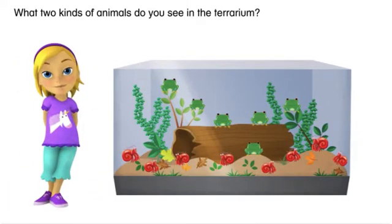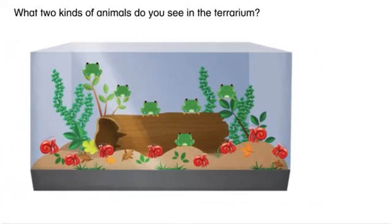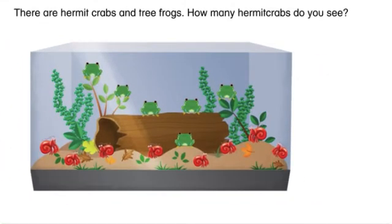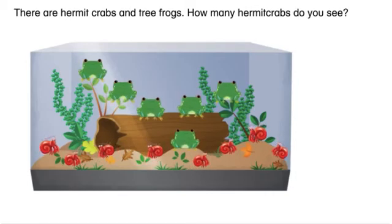What two kinds of animals do you see in the terrarium? There are hermit crabs and tree frogs.